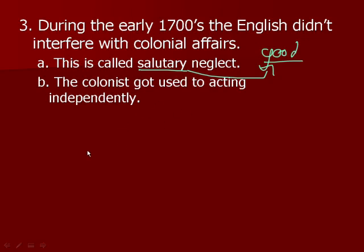The colonists got used to acting independently. It's like a situation where your parents say you can stay out as late as you want, do whatever you want, go wherever you want — and they do that for a whole year. You would get used to coming in at 5 o'clock in the morning, doing whatever you want. Then all of a sudden they decide you have to be in bed by 6 p.m. You would get used to that independence and then get pretty mad that you had to stop — causing conflict between you and your parents. That's what's going to happen here in a little while.